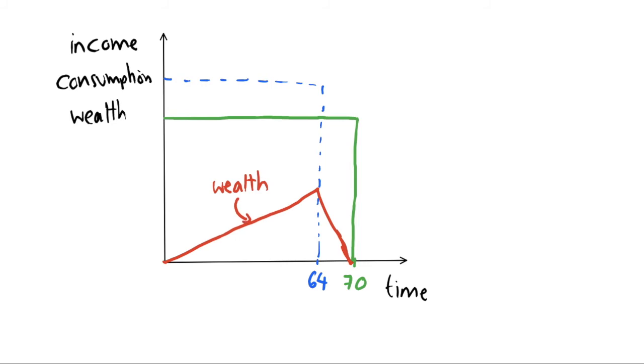So we start with zero savings, we don't get any inheritance. And in the early part of our life our income is higher than what we're consuming, so our wealth curve is increasing. It's increasing until we stop earning but we continue consuming, so our wealth quickly goes down. And ideally what we want is our wealth to be zero at age of 70.